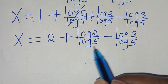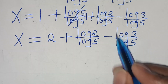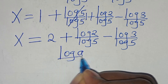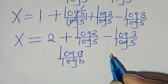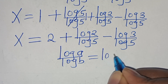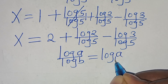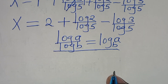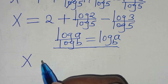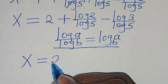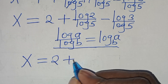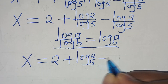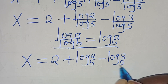You find that log 2 divided by log 5, and log 3 divided by log 5, are in the form of log a over log b, which we can express as log a to base b. Let's apply this property, so that x here is equal to 2 plus log 2 to base 5, minus log 3 to base 5. So this is the value of x.